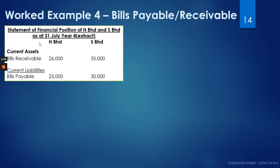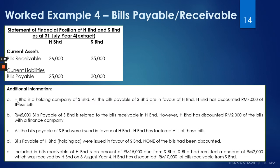Now let us look at this illustration. This is the statement of financial position of a company called H Berhad. It is the separate financial statement of H Berhad and S Berhad, and the year end is 31st of July, year four. We have the bills receivable and the bills payable as the items being our focus today. These are the additional information and these are to be treated separately.